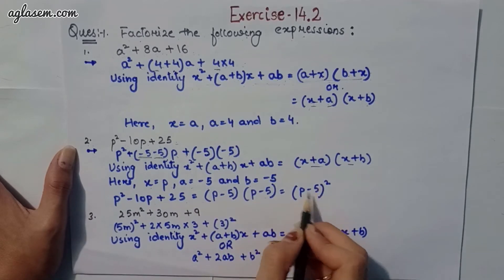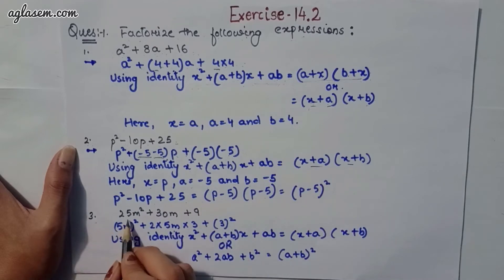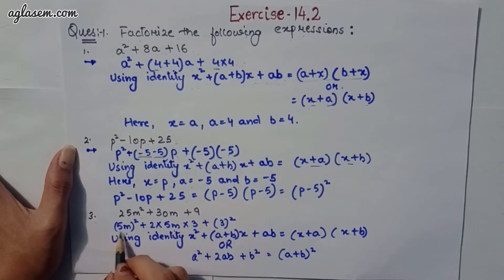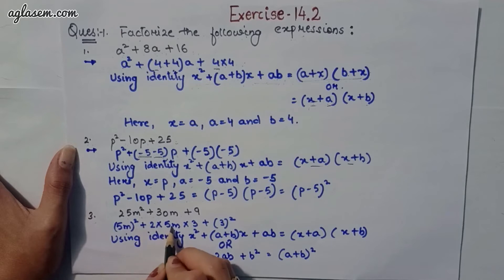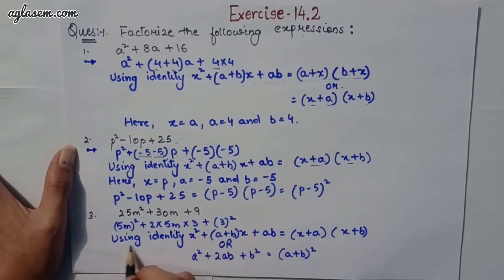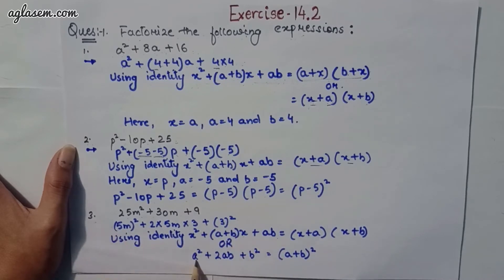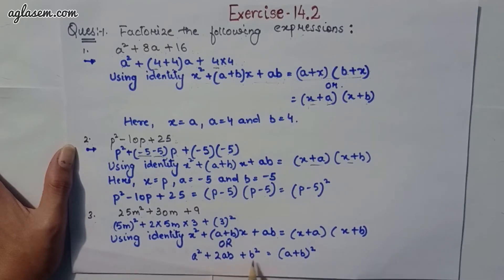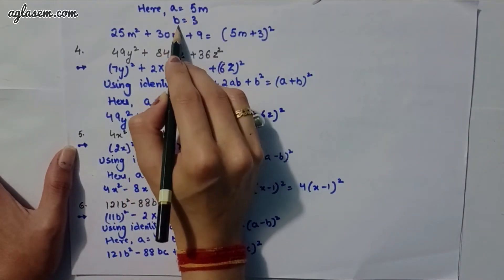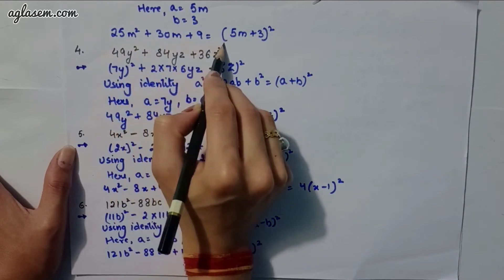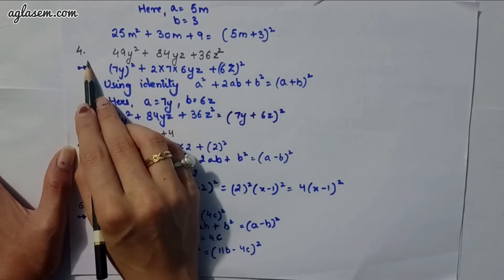That equals (p − 5)². Moving to the third part: 25m² + 30m + 9. We write this as (5m)² + 2·(5m)·3 + 3², using the identity a² + 2ab + b² = (a + b)². Here a = 5m and b = 3, so 25m² + 30m + 9 = (5m + 3)².